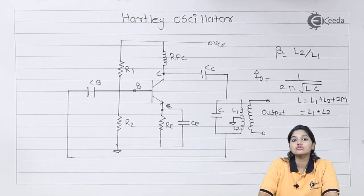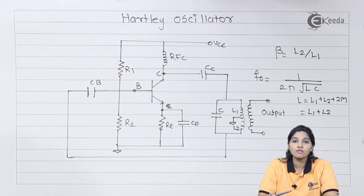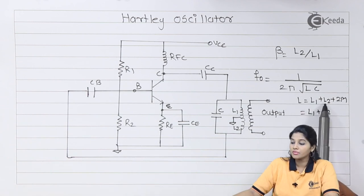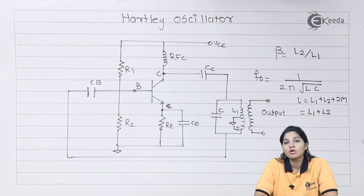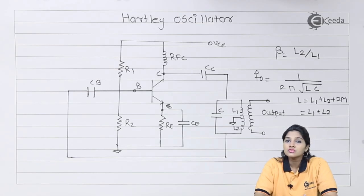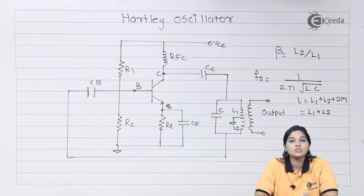As we are using two coils, L1 and L2, we also need to consider mutual inductance. That's why the value of L becomes L1 plus L2 plus 2M. If we ignore or neglect the mutual inductance, the value of L becomes L1 plus L2. In this way, we can calculate the frequency based on the component value of inductor and capacitor.